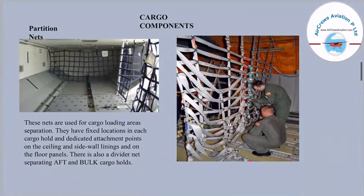There are different kinds of cargo components used. The first is partition nets. These nets are used for cargo loading area separation. They have fixed locations in each cargo hold with dedicated attachment points on the ceiling, sidewall linings, and floor panels. There is also a divider net separating the after and bulk cargo holds. These nets help in partitioning with respect to different kinds of cargo.